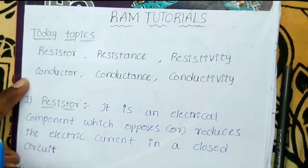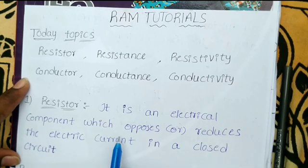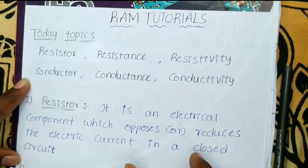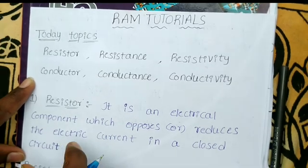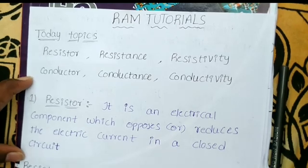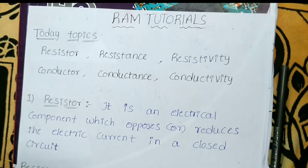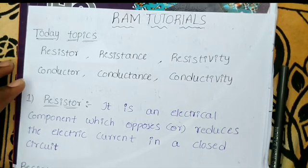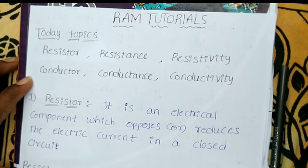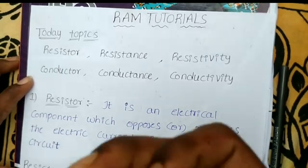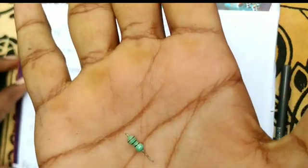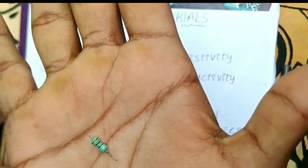First, I will show you the Resistor. It is an electrical component which reduces the electrical current. In the closed circuit, I will show you the electrical component. Usually, there are many types of Resistor: Carbon Composition Resistors, Variable Resistors, and Carbon Metallic Resistors.